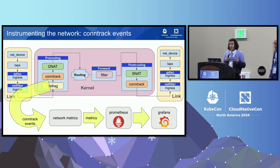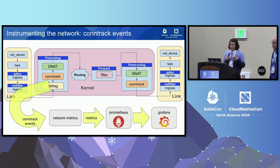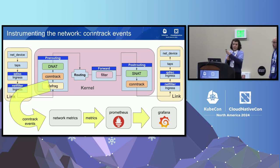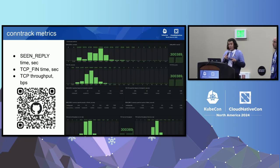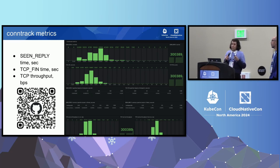You can listen to conntrack events via a netlink socket, aggregate those events, report all the timestamps, evaluate the SLIs I've just explained, and then expose the metrics to Prometheus and Grafana for a nice visualization. There is an app under this QR code that actually does that. It's really simple to apply to your cluster — it has a DaemonSet that can be created, all the Prometheus and Grafana dashboards, everything you can see.